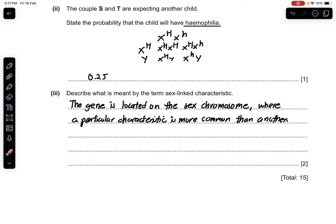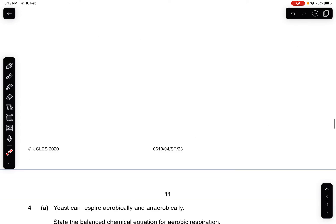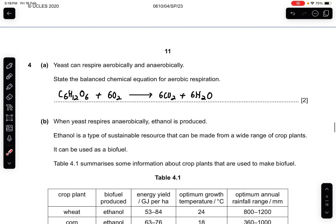Part 3: describe what is meant by the term sex-linked characteristic. The gene is located on the sex chromosome, where a particular characteristic is more common in one sex than the other.